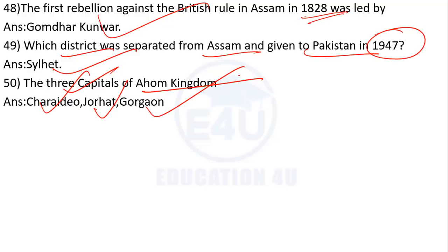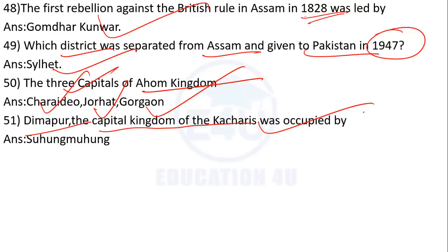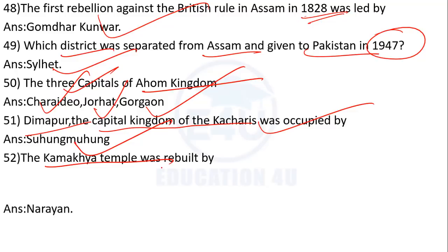The Ahoms had three capitals: Saraydeo, Jorhat, and Garhgaon. The capital of the Kachari kingdom was Dimapur. Dimapur was occupied by Suhung Dihingia Raja. The Kamakhya temple was rebuilt by whom?